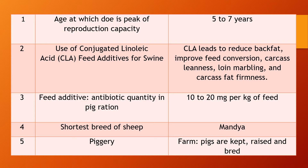Question 2. Use of conjugated linoleic acid — in short it is called CLA — as a feed additive for swine. Important question. Linoleic acid is added at the rate of 3% of the feed. The answer is conjugated linoleic acid leads to reduction of back fat, improves feed conversion in swine, causes carcass thinness, loin marbling, and carcass fat firmness. Due to this reason, CLA is added in swine food.